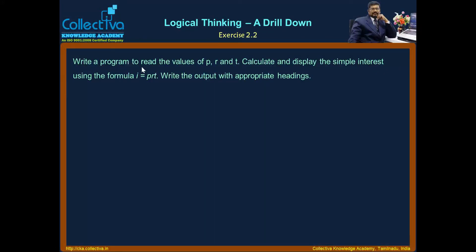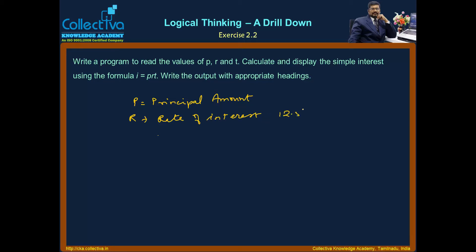Write a program to read the values of P, R, T and calculate and display the simple interest using the formula I equals PRT. Simple interest uses one formula: P is the principal amount, R is the rate of interest — typically expressed over 100 — and T is the time or number of years. This is an important difference to understand for simple interest.